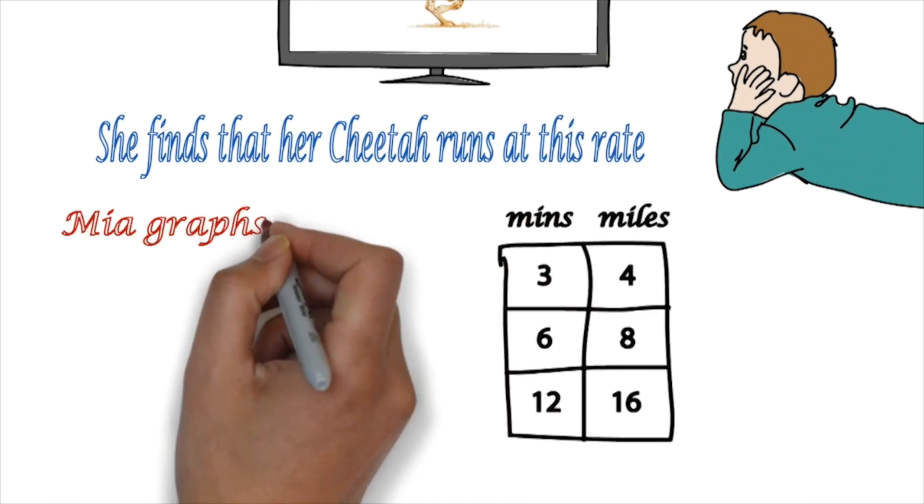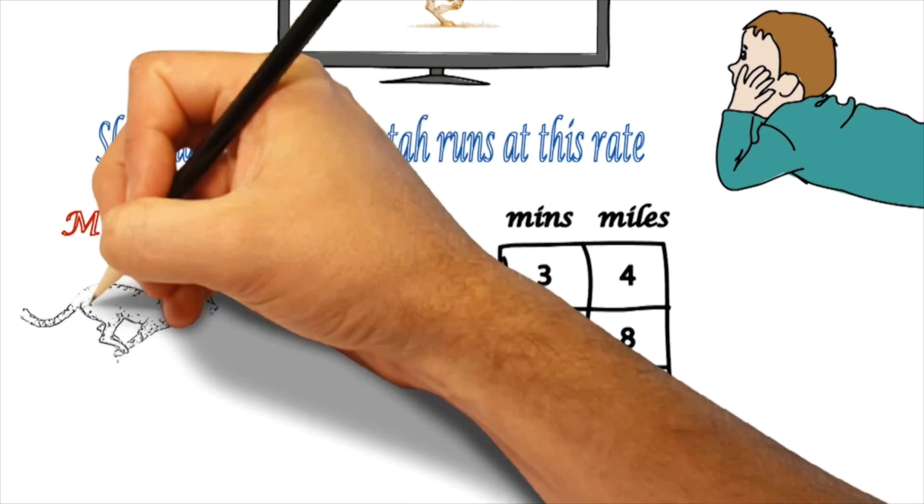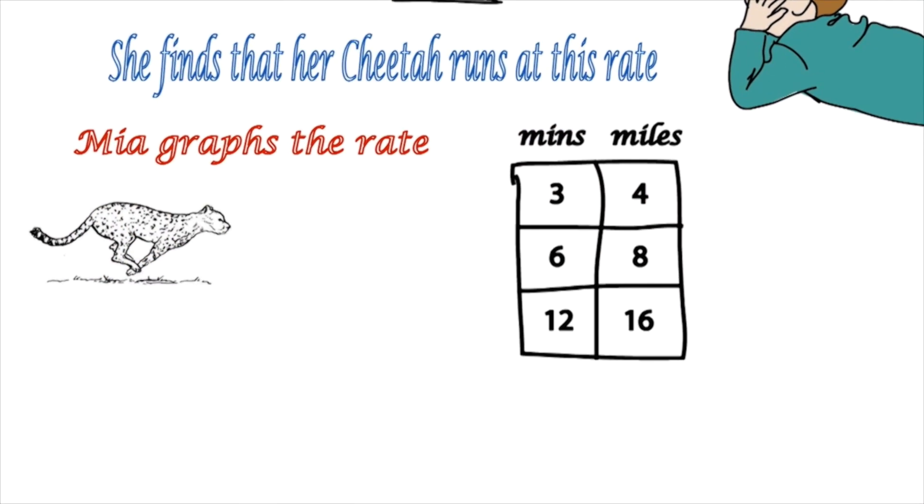So Mia graphs the rate, and you can see in 3 minutes the cheetah runs 4 miles. In 6 minutes they run 8 miles, and in 12 minutes she runs 16 miles.